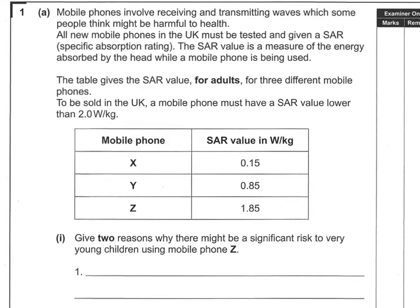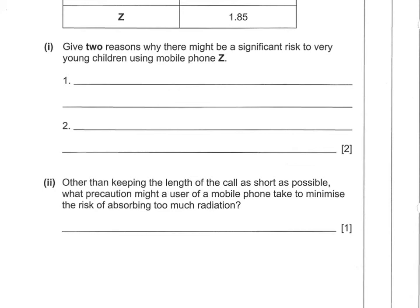Question 1, Part A. Mobile phones involve receiving and transmitting waves which some people think might be harmful to health. All new mobile phones in the UK must be tested and given an SAR — Specific Absorption Rating. The SAR value is a measure of the energy absorbed by the head while a mobile phone is being used. The table gives SAR values for adults for three phones: X, Y, and Z with values of 0.15, 0.85, and 1.85. To be sold in the UK, a phone must have a SAR value lower than 2.0 watts per kilogram. Give two reasons why there might be a significant risk to very young children of using mobile phone Z.